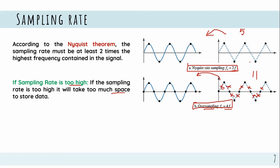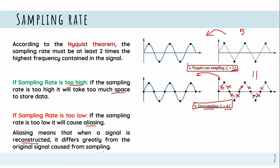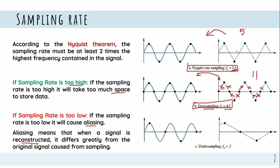If the sampling rate is too low, when we go back and reconstruct the original signal it will be different. For example, if we have 4 sample points, this is under-sampling. The reconstructed analog signal will be totally different from the original. When the sampling rate is less than two times the maximum frequency, we get aliasing.